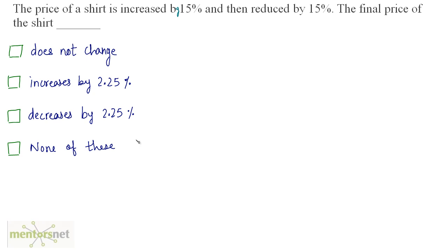The price of a shirt is increased by 15% and then reduced by 15%. What is the final price of the shirt? At first glance it seems the price will not change, but that is not the correct answer. Let us consider the price of the shirt to be 100 rupees, so P is equal to 100.